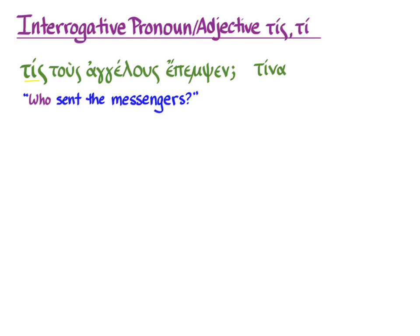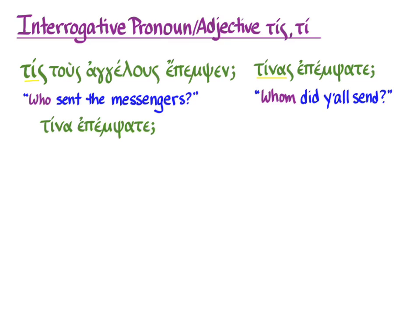Another example: tinas epemsate. Here the interrogative pronoun is masculine or feminine, accusative, plural. It doesn't modify another noun, so it's a pronoun, not an adjective. The translation is: 'Whom did y'all send?' Next: tina epemsate — again in the singular accusative: 'Whom did y'all send?'